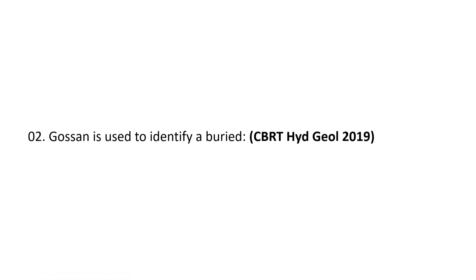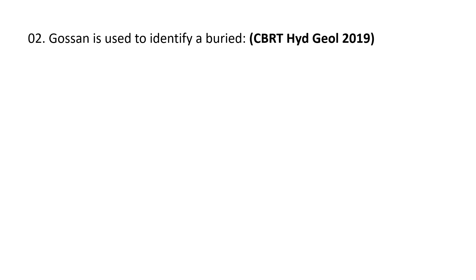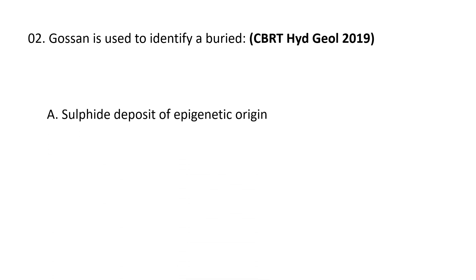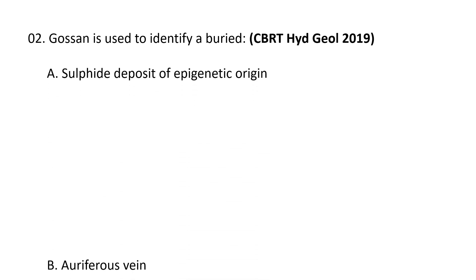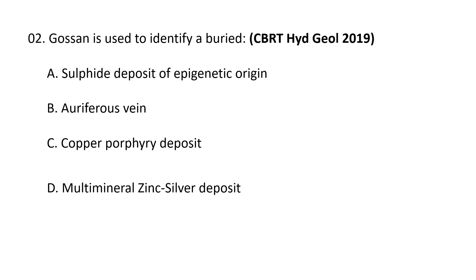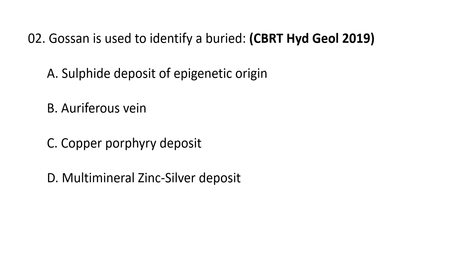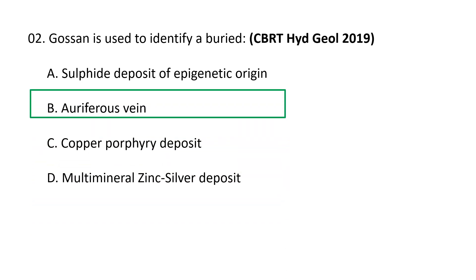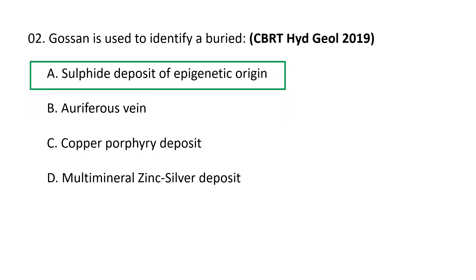Next question. Gossan is used to identify a buried: A. Sulphide Deposit of Epigenetic Origin, B. Auriferous Vein, C. Copper Porphyry Deposit, D. Multimineral Zinc-Silver Deposit. The correct answer is A — Sulphide Deposit of Epigenetic Origin. This was the question asked in the Hydrogeologist Exam 2019.